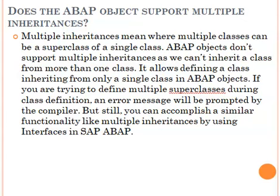Multiple inheritance means where multiple classes can be super classes for a single class. ABAP objects does not support multiple inheritance, as we cannot inherit a class from more than one class. It allows defining a class inheriting from only a single class in ABAP objects. If you try to define multiple super classes during class definition, an error message will be prompted by the compiler.